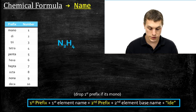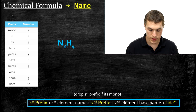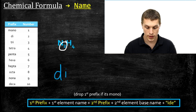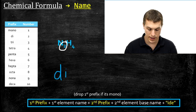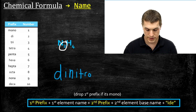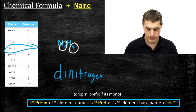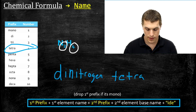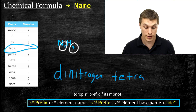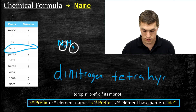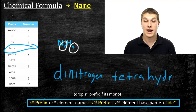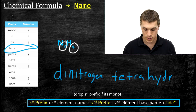One more example: N2H4. The first prefix corresponds to two, so we write di, then nitrogen. We have four hydrogens, so we use the prefix tetra. The base name of hydrogen is hydr, and we add -ide. So N2H4 is dinitrogen tetrahydride.